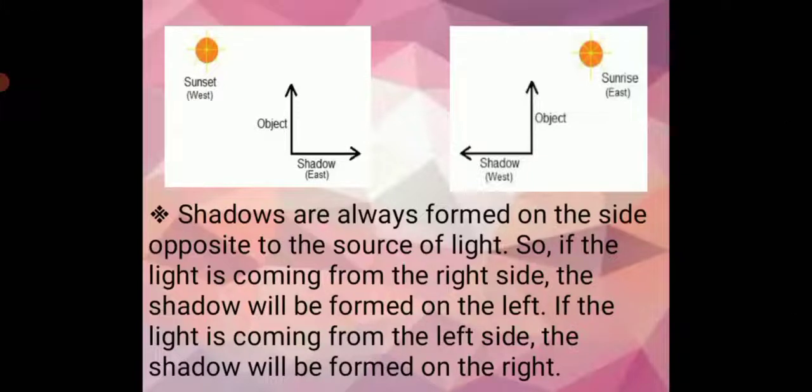Students, shadows are always formed on the side opposite to the source of light. So if the light is coming from the right side, the shadow will be formed on the left. If the light is coming from the left side, the shadow will be formed on the right.